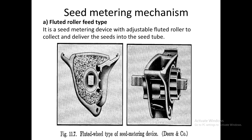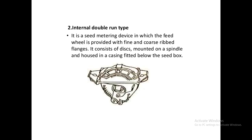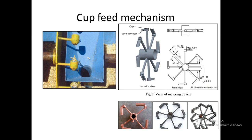The seed metering mechanism is a very important component in a seeder as well as a planter. The first type is the fluted roller feed type, which has a rectangular shaft to which a plate with hemispherical openings on the outside is connected; it collects and delivers seeds into the seed tube. The internal double run type also has a shaft with a plate carrying fine and coarse ribbed flanges through which seeds enter the seed tube. In the cup feed mechanism, small cup-shaped components are attached to a circular shaft; as they rotate they pick up seeds and convey them to the seed tube.